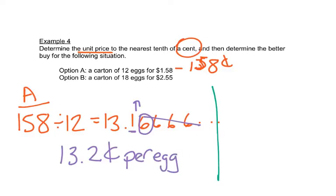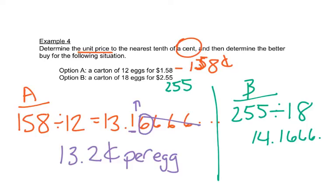So now we're going to do the same thing with option B. We want this in cents, so we're going to have 255. Remember it's moving the decimal place two places to the right. So we'll take 255, and we'll divide by 18 eggs. And this gives us 14.16666. It keeps going. So again, we want to round to the nearest tenth of a cent. So this is in the tenth spot. The number after tells us to go up. So we get 14.2 cents per egg.